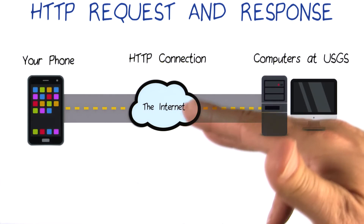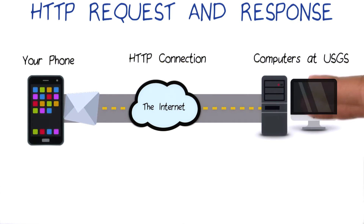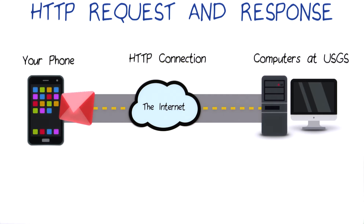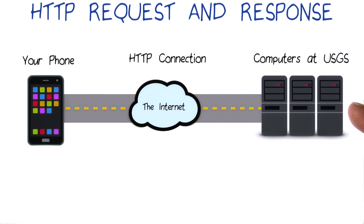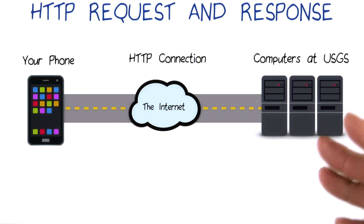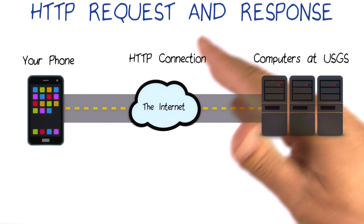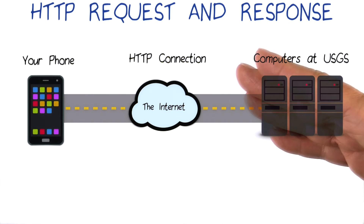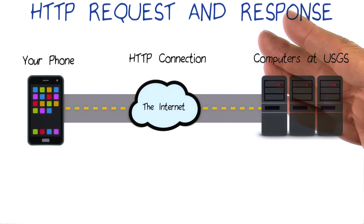To communicate to a computer in a different location, we must establish a communication channel, also known as a network connection, across the internet. Then we can exchange messages with the other computer. In this diagram, we've represented USGS as a single computer, but keep in mind that they have a lot of data, so they probably have a whole group of computers responding to requests — a single computer wouldn't be able to handle requests from all over the world.